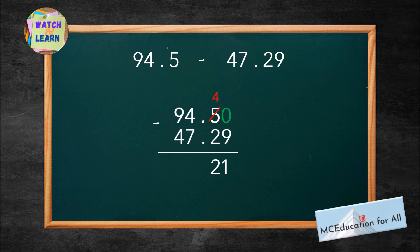4 take away 7 is unreasonable. So, let's use partner numbers again. Partner of 7 is 3. Add 3 to 4. The answer is 7. And 9 becomes 8. 8 minus 4 is 4.